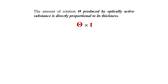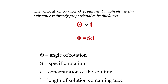The angle of rotation theta is dependent on certain parameters. For a solid optically active substance, theta is directly proportional to the thickness T of the material. For liquid optically active substances, theta is directly proportional to C times L, where C is the concentration of the solution and L is the length of the solution. Removing the proportionality sign requires inserting a constant S, which stands for specific rotation.